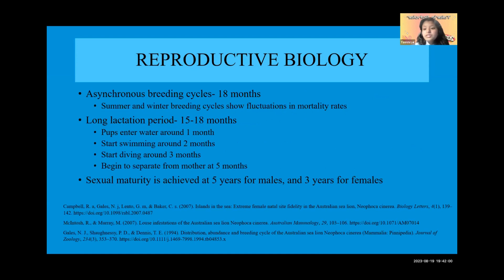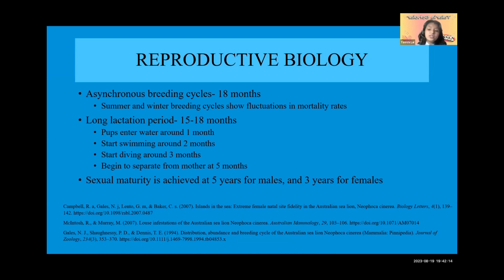Let's talk about the reproductive biology of the Australian sea lion. Unlike most pinnipeds and other mammals, the Australian sea lion has an asynchronous breeding cycle, which means it breeds every 18 months rather than every year, so the breeding season changes every year or so.